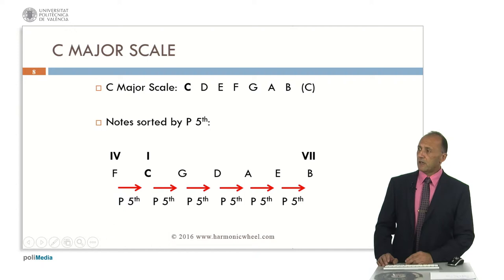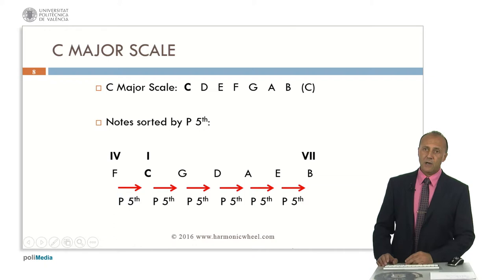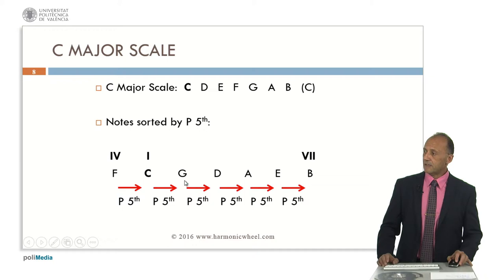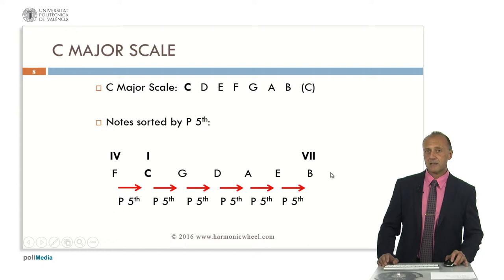If we start with the C major scale, whose notes are C, D, E, F, G, A, B and C, and we want to obtain other major scales, one way is to sort those notes by perfect fifths. That is, we will write first note F, then C, G, D, A, E, B. In this sequence, the first note is the subdominant, the second one is the tonic, and the last one is the leading tone.